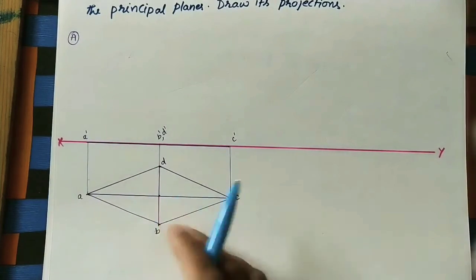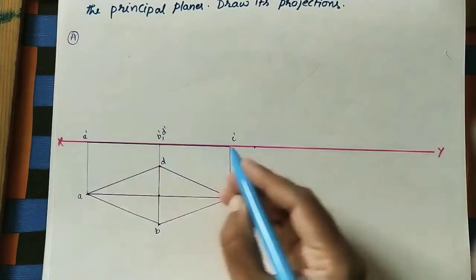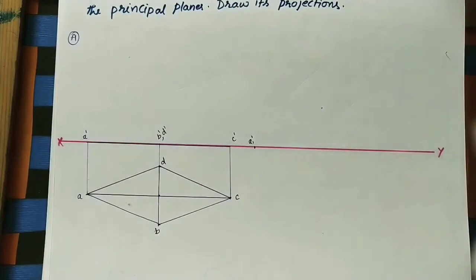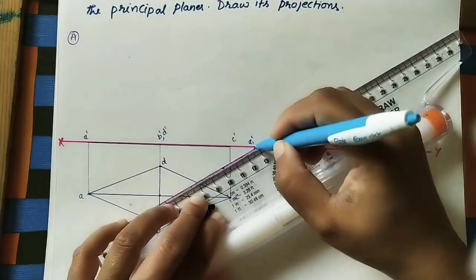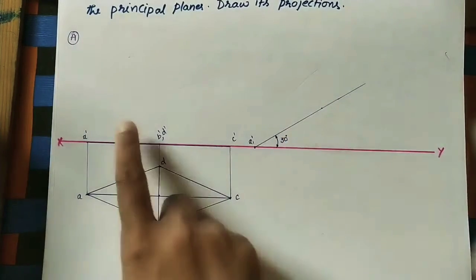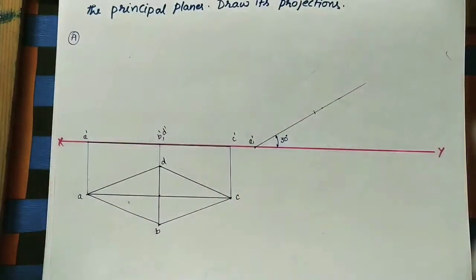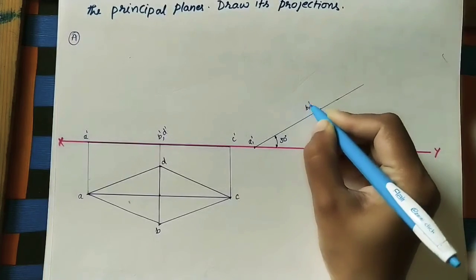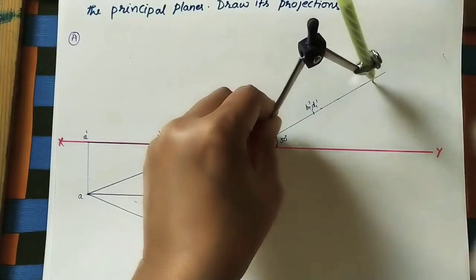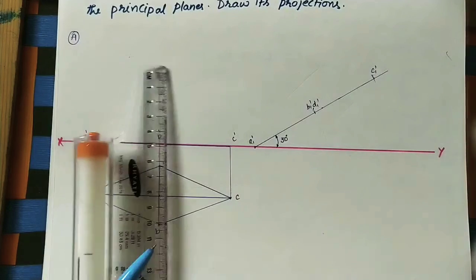This is the initial position. Now the line is making 30 degrees with the HP. Take a convenient gap between the two diagrams. Mark this point as A1-dash. Draw a line at 30 degrees. Mark the length of the longer diagonal on this line. Mark B1-dash and D1-dash at the appropriate point. Then using a compass, measure and mark C1-dash. Drop projector lines at all these points from the reference line.